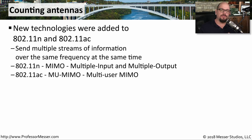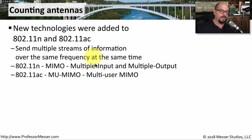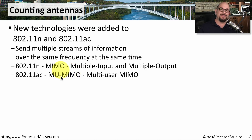Not only did we change the amount of frequencies used with these channel bandwidths, we also changed the way data is sent over wireless networks. Prior to 802.11n, a single stream of information was sent between point A and point B. 802.11n introduced MIMO — multiple input and multiple output — which allows multiple streams of information to be sent over exactly the same frequencies at the same time. 802.11ac improved on this by introducing multi-user MIMO, enabling data to be sent to multiple users simultaneously over the same frequencies.